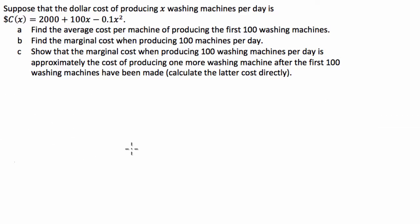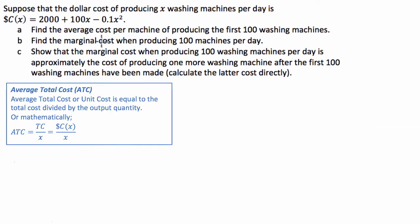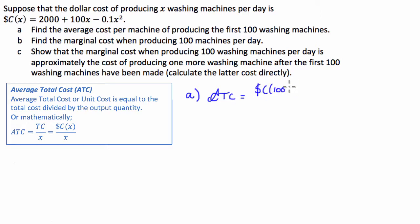So let's start with part A. For part A, to find the average cost per machine of producing the first 100 washing machines, all we're going to do is find the total cost of producing 100 washing machines and divide it by 100. So the average total cost is going to be equal to the cost of producing 100 washing machines divided by 100.